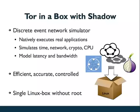So we're proposing TOR in a box using the Shadow simulator. Shadow is a discrete event network simulator. Shadow is different from most network simulators in that it natively executes real applications such as TOR. It does simulate time, simulate network and cryptographic operations, and also includes an accurate CPU delay model. By taking measurements of the code execution, it can accurately characterize the processing delays of the application. Shadow also models latency and bandwidth using real measurements taken from the real Internet. Shadow is efficient, accurate, and controllable, and runs on a single Linux machine without privileges, so anyone can easily run experiments using our simulator.